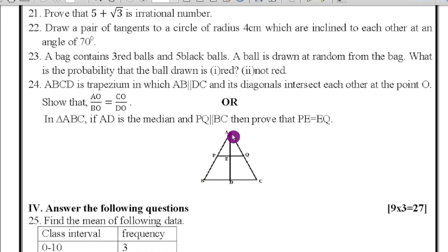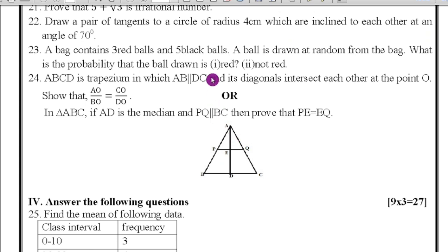Next question number 24: ABCD is a trapezium in which AB parallel to DC and its diagonals intersect each other at the point O. Show that AO/BO = CO/DO. Or in a triangle ABC if AD is the median and PQ parallel to BC, then prove that PE = EQ.